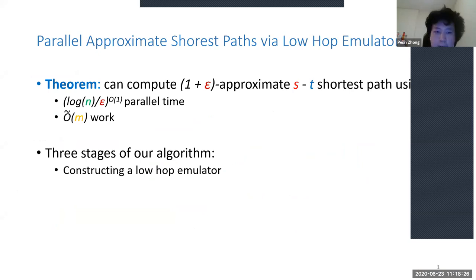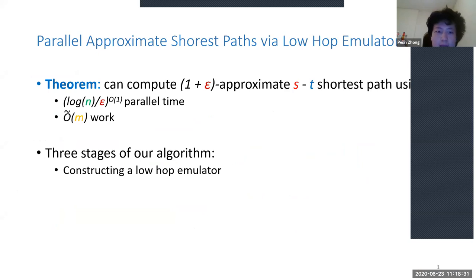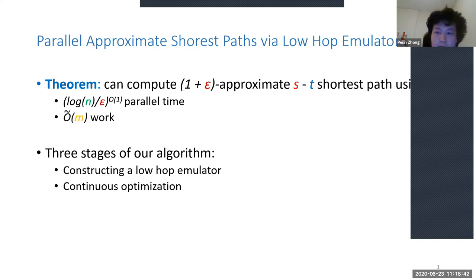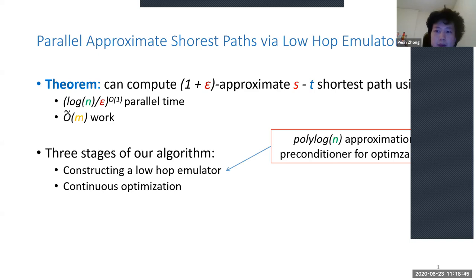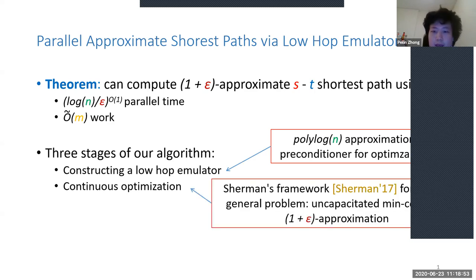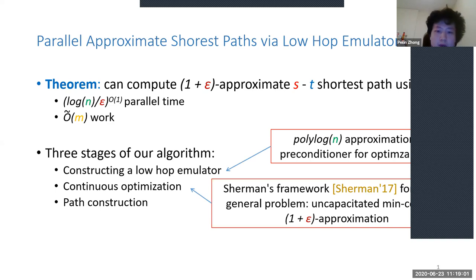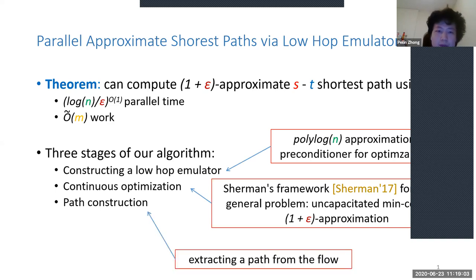We use the first stage local emulator to compute polylog approximate shortest paths and construct a preconditioner for the second stage continuous optimization. In the second stage, as mentioned by Jason, we use Sherman's framework to solve uncapacitated min-cost flow up to 1+ε approximation. In the third stage, we show how to recover a path from the flow. The high-level picture: we develop a local emulator and use it to compute single-source shortest paths up to polylog approximation. By combining with Bourgain's embedding, we embed the original graph into the L1 metric, then develop a compressible preconditioner.